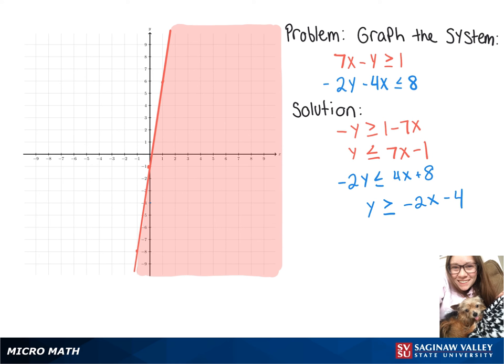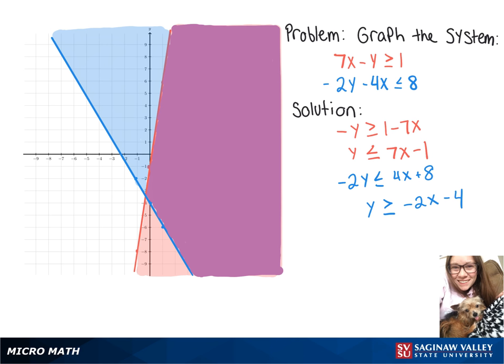So now we'll graph that line, which will also be a solid line because it's greater than or equal to. And then because it's greater than, we're going to shade everything that is above that line. And then everything you see there in that purple region is a solution to this system.